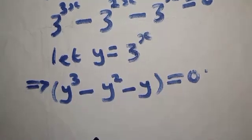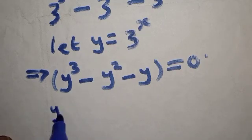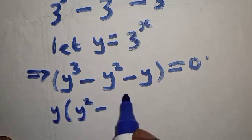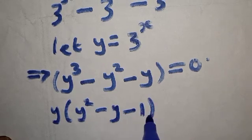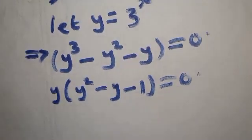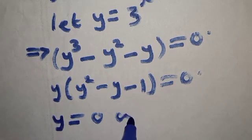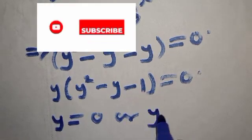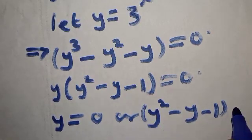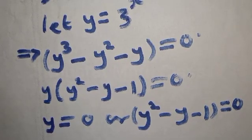Let y equal 3 raised to power x. Factoring out y from the expression, we have y times the quantity y squared minus y minus 1, equal to zero. This implies that y equals zero, or y squared minus y minus 1 equals zero.